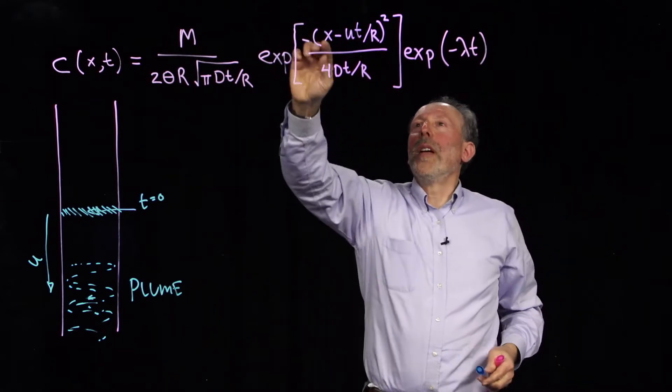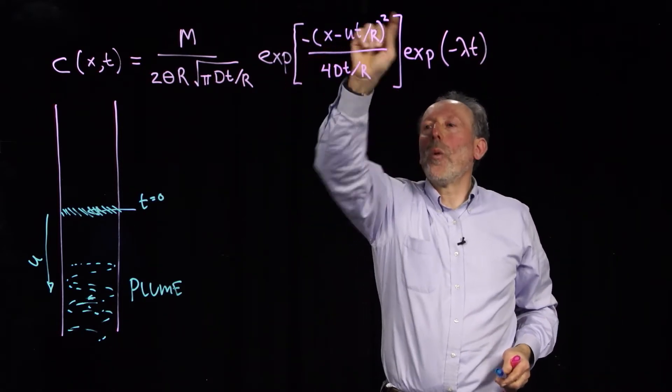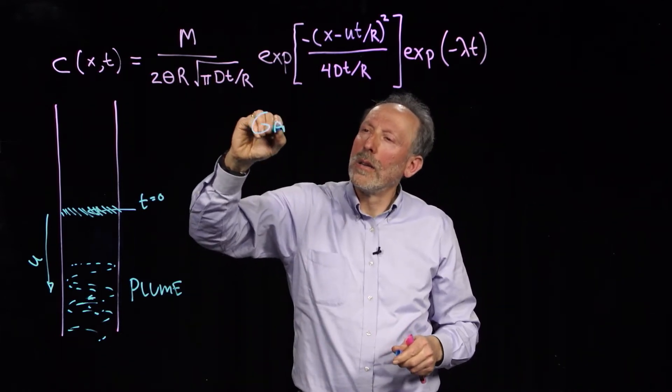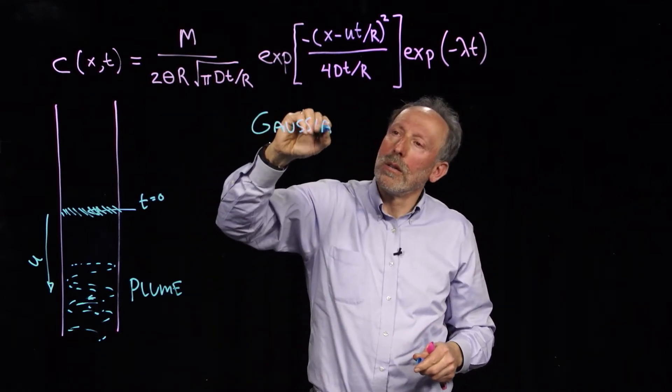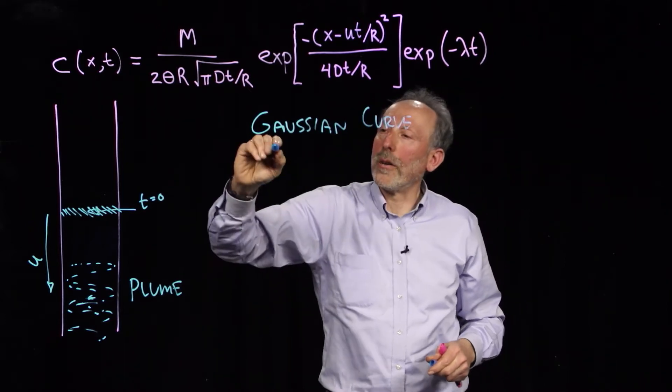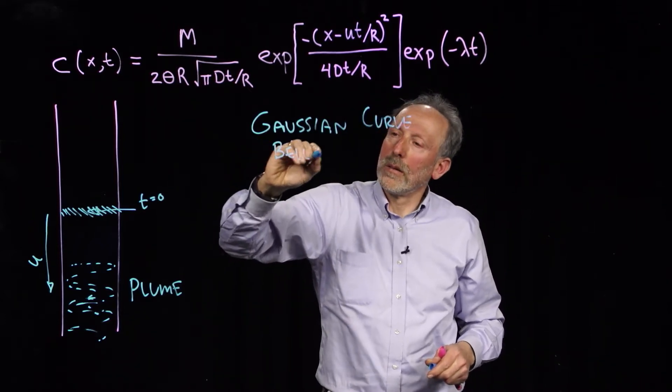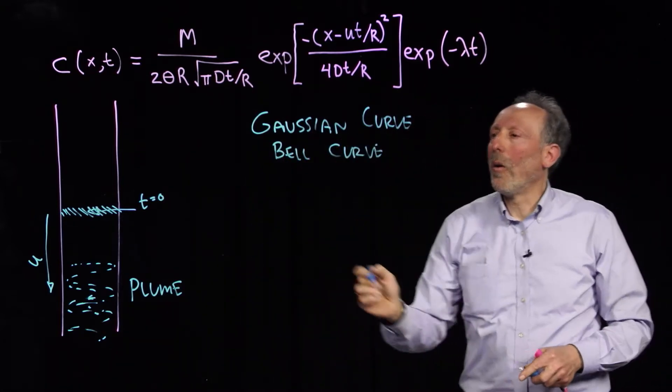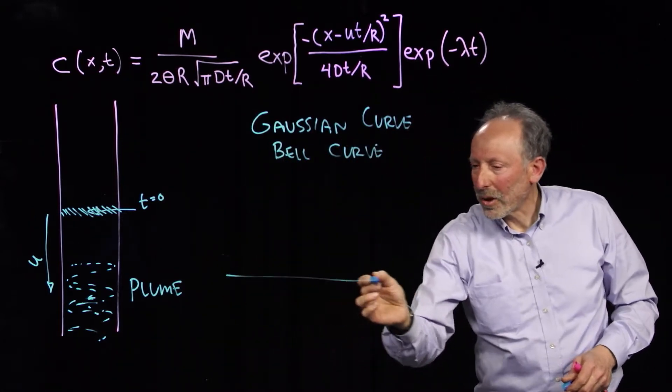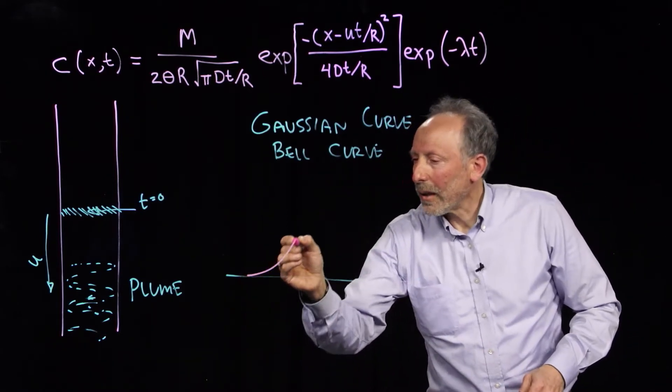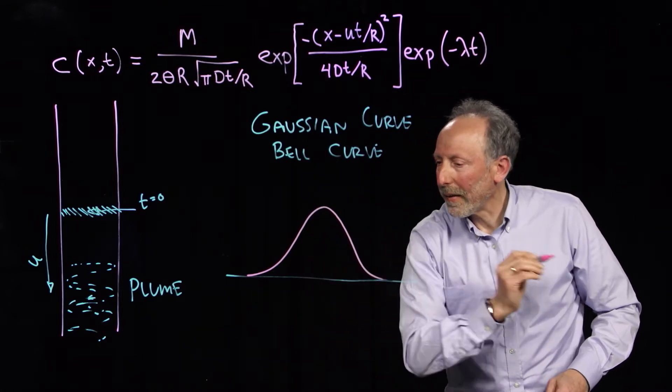This form, the x minus ut squared, is a Gaussian curve, or a bell curve. We know that that is what's called the normal distribution. And so it's gonna have a nice little form like that.